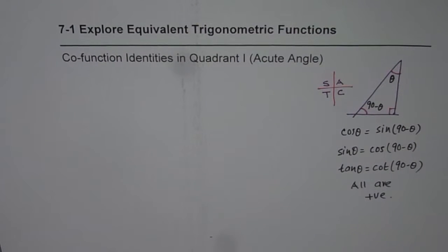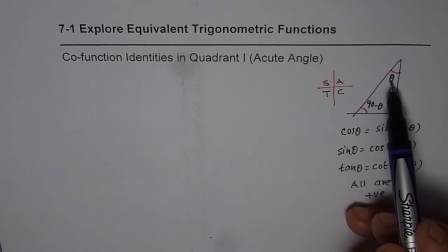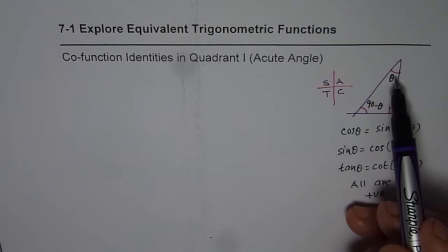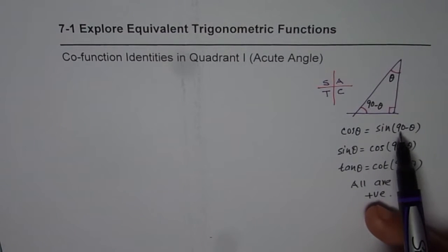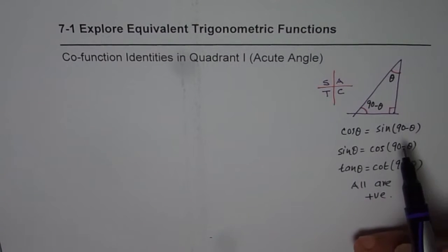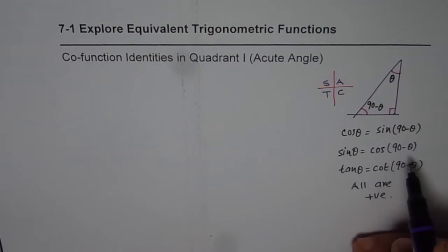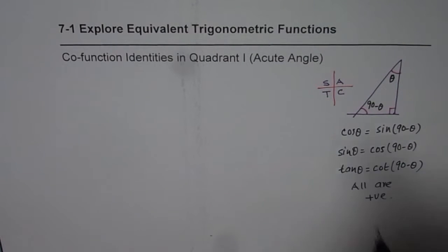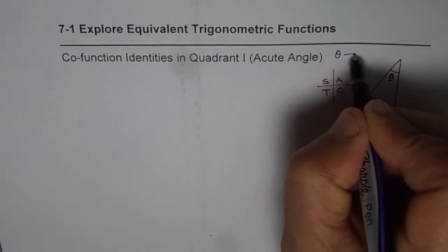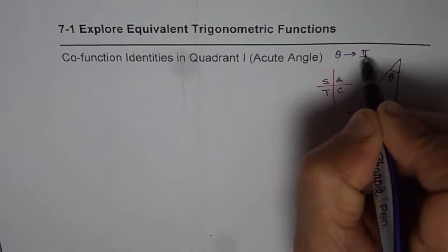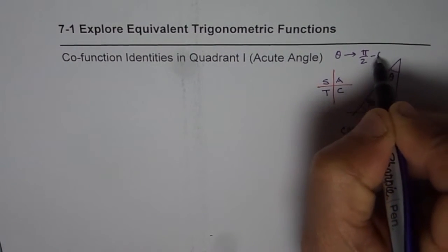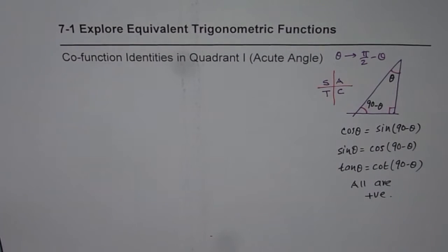That will actually change some of these signs, but otherwise the concept is very simple — you take the co-function of the complementary angle, which is 90 minus theta. If you are working in radians, it should be pi by 2 minus theta. That gives you co-function identities.